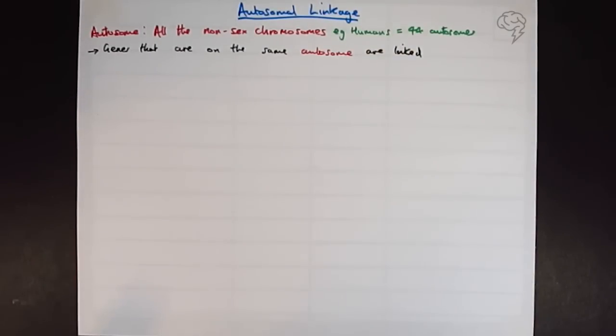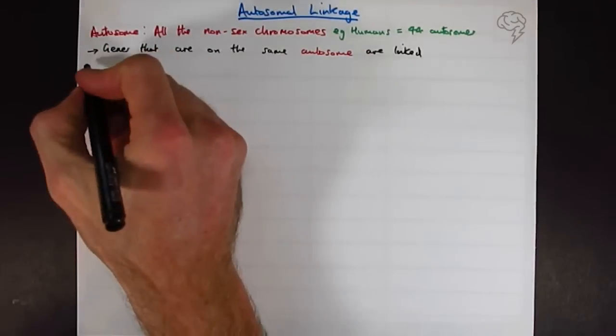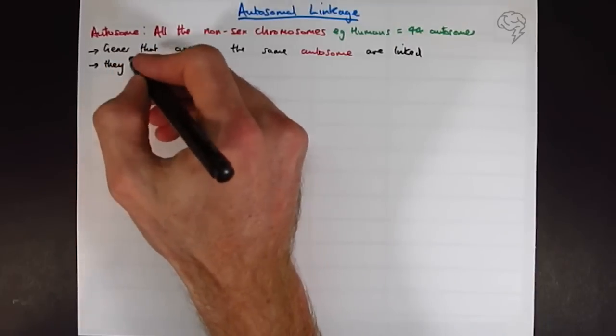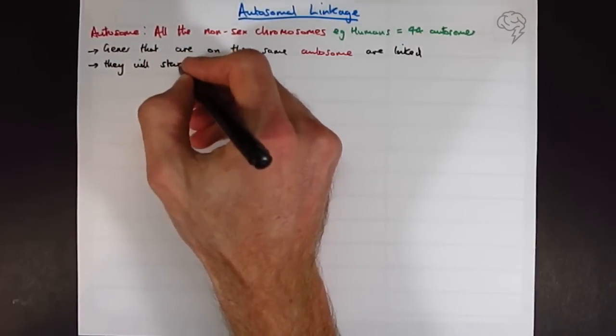Why do we say that they're linked? Well, it means that during meiosis, during independent assortment or independent segregation, whichever phrase you prefer, they're going to stay together. They won't be separated. If they're on separate chromosomes, they will be separated, or can be separated, during independent segregation. So if they're on the same chromosome, they will stay together during independent assortment.